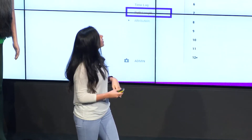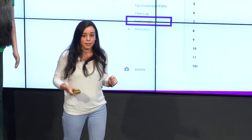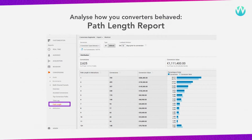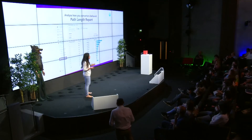Here's another idea: look at your path length report. This report tells you how many times people interacted with your website before they converted. If you look at this one, you will see that only 29% of people who converted actually did it after the first interaction, which means that at least 70% of users visited the website at least twice before converting.